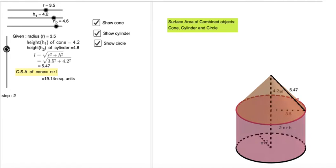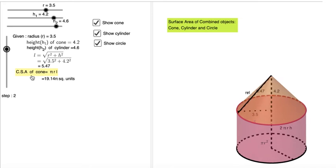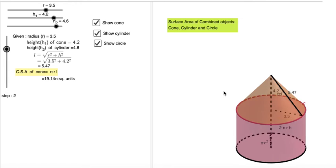Step number 1. Curved surface area of cone is pi rl. As you know, you see that pi rl rotating there. So now click surface area of the cone. Now we found surface area of the cone.